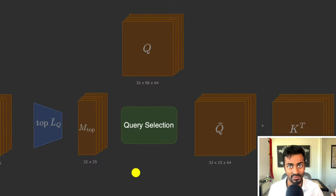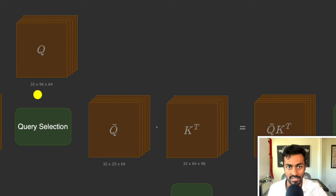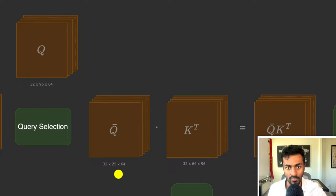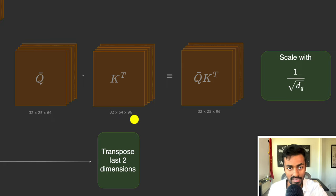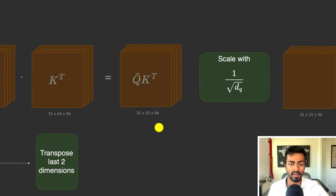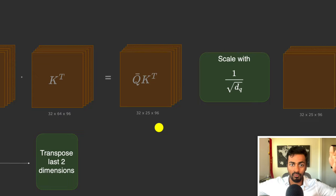We select those 25 most important queries from the original query tensor. Of the 96 queries, we select only 25, giving a 32 × 25 × 64 tensor. We then apply it to the transpose of the key vector, which is 32 × 64 × 96, to get a tensor of 32 × 25 × 96. This means for every important query vector, we determine its interaction with all of the keys.